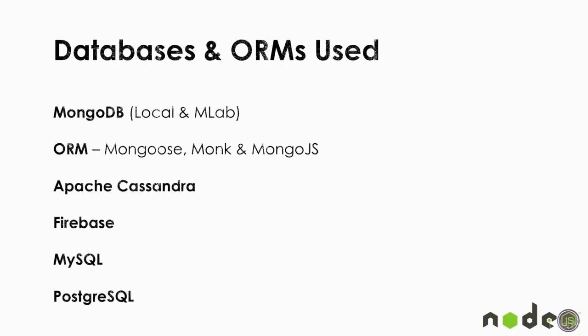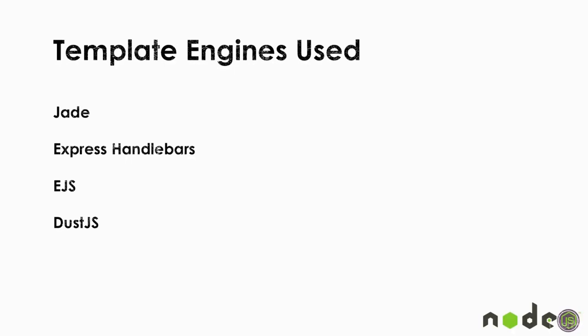For databases, MongoDB is the most popular and we'll be installing it locally. We'll also have projects using a remote MongoDB database with mLab. The ORMs we'll use — Mongoose, Monk, and MongoJS — allow us to interact with the database easily. We'll also use Apache Cassandra, a column database; Firebase, a remote NoSQL database; and MySQL and PostgreSQL, which are relational databases.